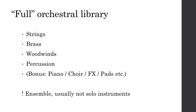Let's talk about orchestral libraries. By full orchestral libraries, I mean libraries that contain strings, brass, woodwinds, and percussion — those four elements make a full orchestral library. Some libraries offer a bonus on top of that: a piano, a choir, special effects, pads, etc. When I talk about strings, brass, and so on, I'm talking about ensembles. Full orchestral libraries usually will not contain solo instruments — almost all of them are focused on ensembles.